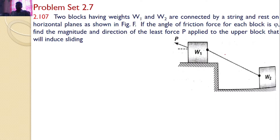Let us draw the free body diagram for both the blocks. First, let us draw the free body diagram for W2. The various forces acting on W2 are: the self-weight, a normal reaction, a frictional force (since W2 will try to move towards the left side), and a string force along the string away from the body. Let T be the string force. There are 4 forces acting on W2.